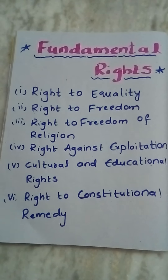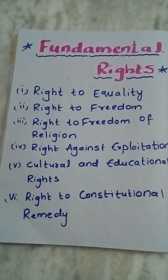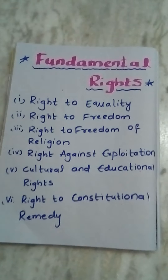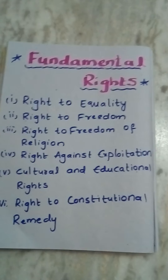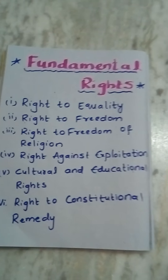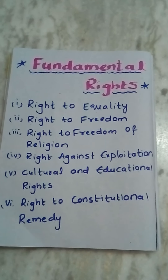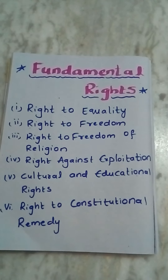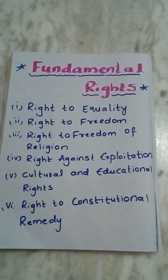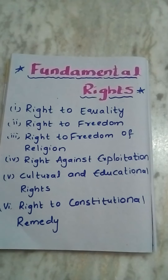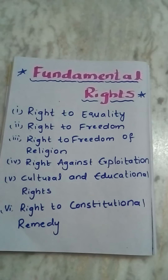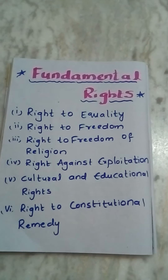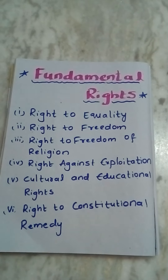Under right to equality there is equality before law, equal opportunity irrespective of employment, social equality, and equal access to public areas — any person can move to any place. It also covers equality in matters of public employment, abolition of untouchability, and abolition of titles. These are the areas in which equality is established.